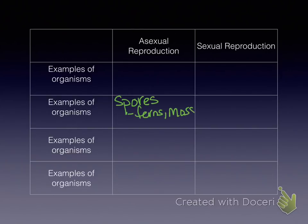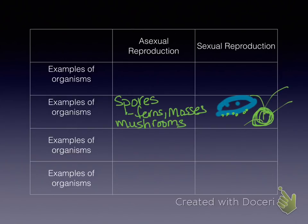Next we have spores. Spores are found with ferns, mosses, and mushrooms. Where do we think we talked about them when we discussed kingdoms and domains? Under eukarya, in fungi — mushrooms are fungi. So those also go through asexual reproduction.